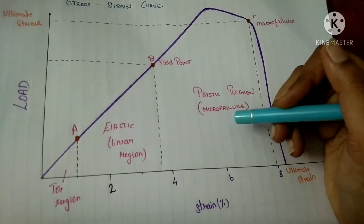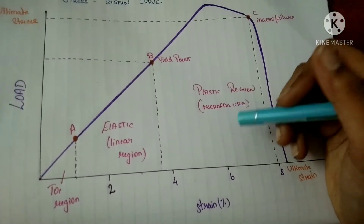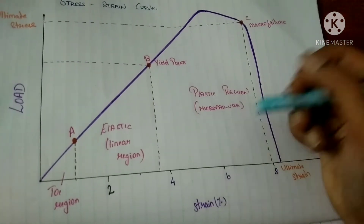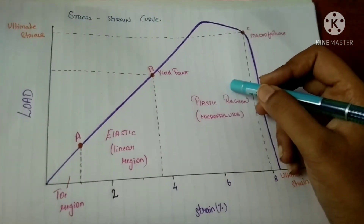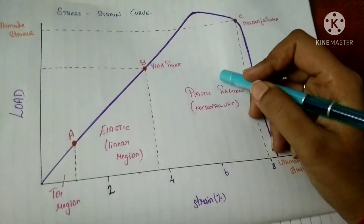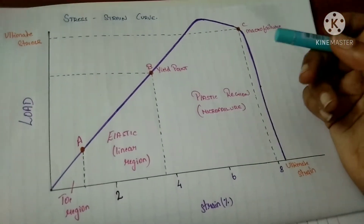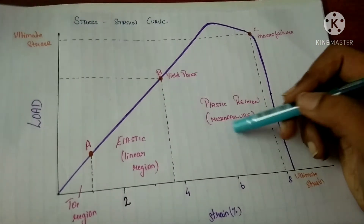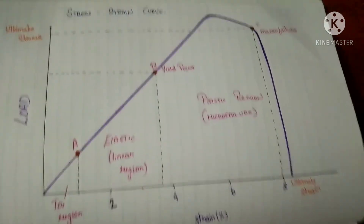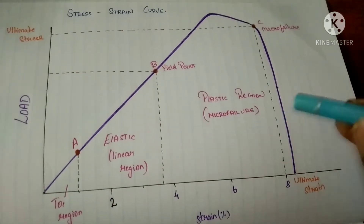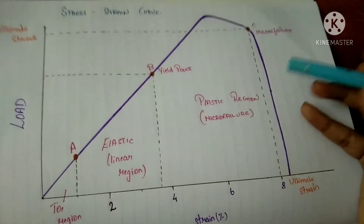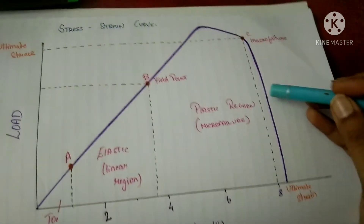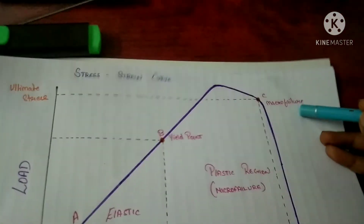In the plastic region, collagen fibers start to fail. The failure begins after the fibers are stretched beyond the point where they can return to their original position. Examples include grade 1 and grade 2 ligament sprains. This region is known as the micro-failure region. If stress continues beyond the plastic region, the fibers experience more stress and there occurs an overt or macro failure, where the fibers start to rupture.